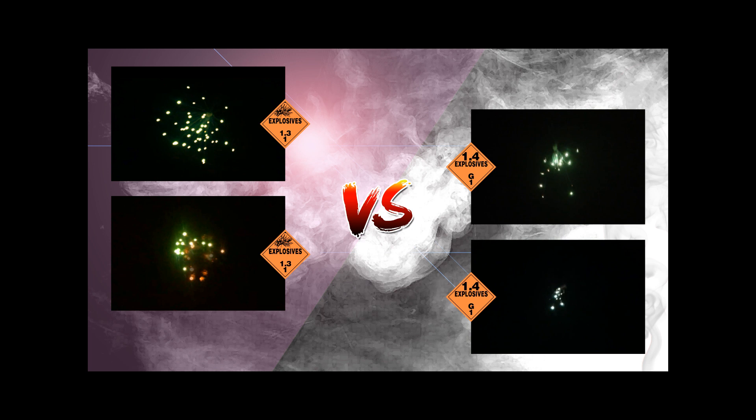So in comparison the most noticeable differences were not only the size of the bursts but also the shape of the bursts. As you can see the 1.3G bursts on the left not only have twice the amount of stars over the 1.4G equivalent but the shape of the bursts are also much more rounded and spherical.